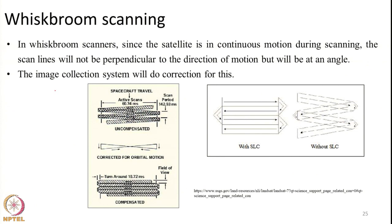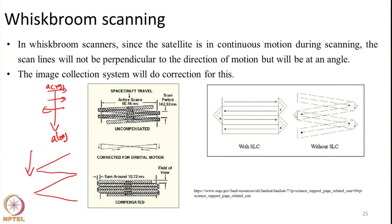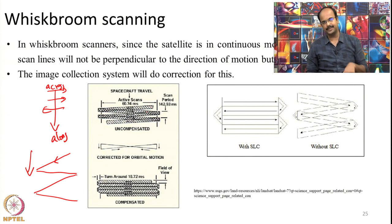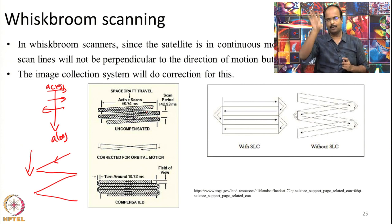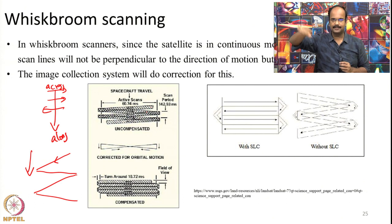Looking at the figure, scanning does not happen straight across track; it follows a skewed path because the satellite is moving as the scanner does its work. Sensor designers adjust for this to ensure there are no data gaps before the scanner completes one scanline. Some correction mechanism is needed because the satellite is continuously moving — when we receive the final image it must be properly aligned.